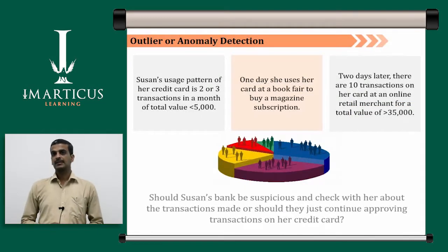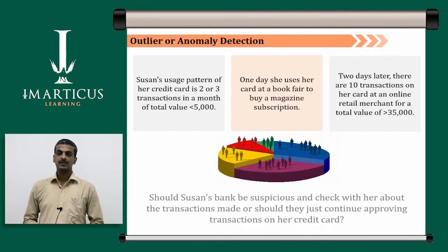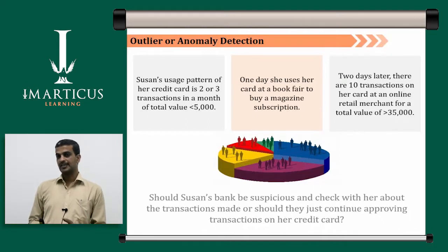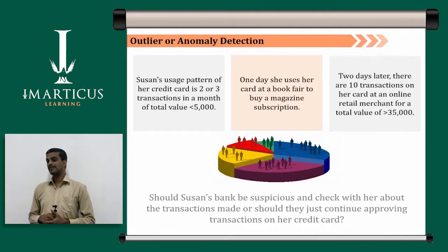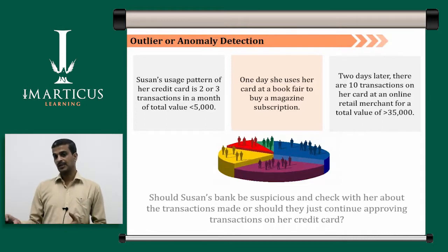Another example of outlier or anomaly detection: Susan's typical credit card usage is 2 to 3 transactions per month with a total value less than 5,000. One day she uses her card at a book fair to buy a magazine subscription. Two days later, there are 10 transactions on her card at an online retail merchant for a total value greater than 35,000. Should the bank be suspicious? Susan's current month's transactions do not match her previous transaction history, making this a clear outlier situation requiring investigation.